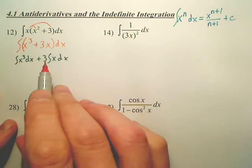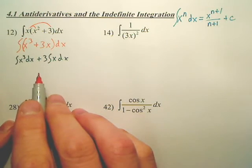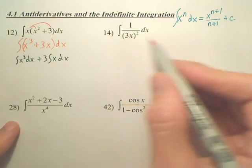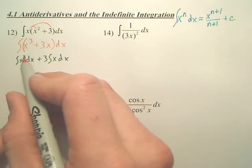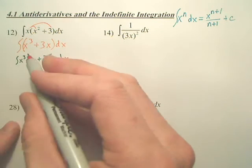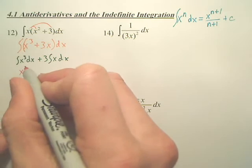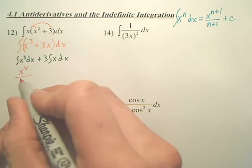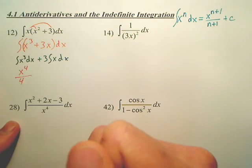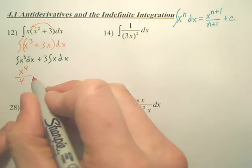You separate it, pull out your GCS. Now, so according to my rule here, what do we do with x to the third? Well, we add a power, which would be x to the fourth, and you divide by four. Are we okay? Plus c.